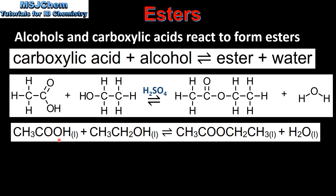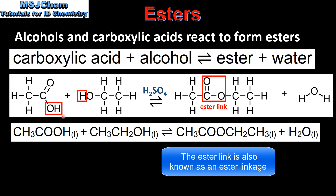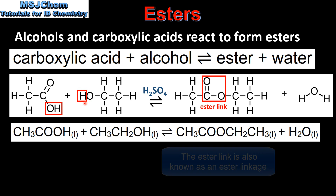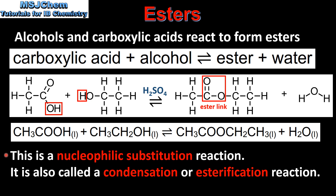Here we have the equation for the reaction: ethanoic acid reacting with ethanol to form the ester plus water. The water molecule is produced from the OH group on the carboxylic acid and the hydrogen atom from the OH group on the alcohol.